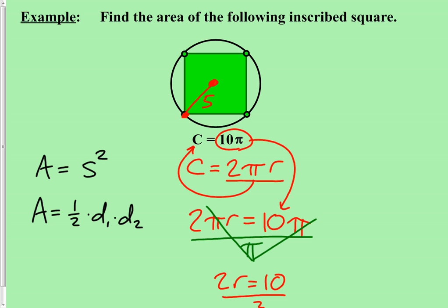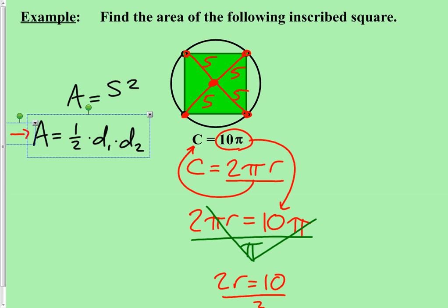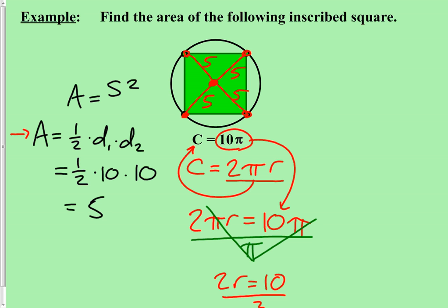Using the diagonal formula: area = ½ × d₁ × d₂ = ½ × 10 × 10 = ½ × 100 = 50. We had no specific units of measure, so the answer is 50 square units.